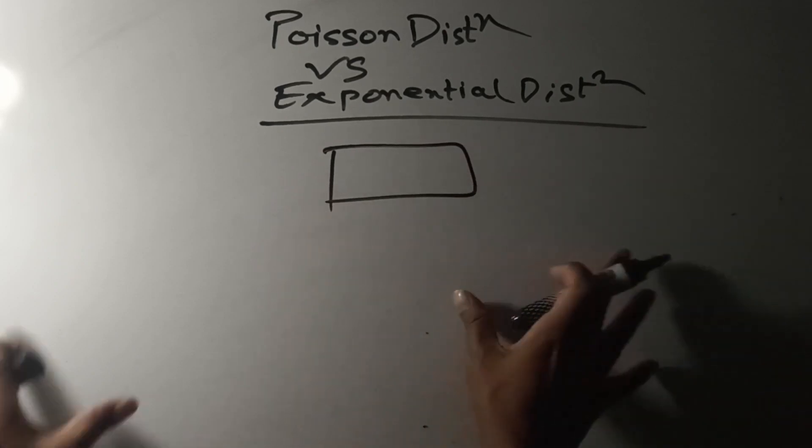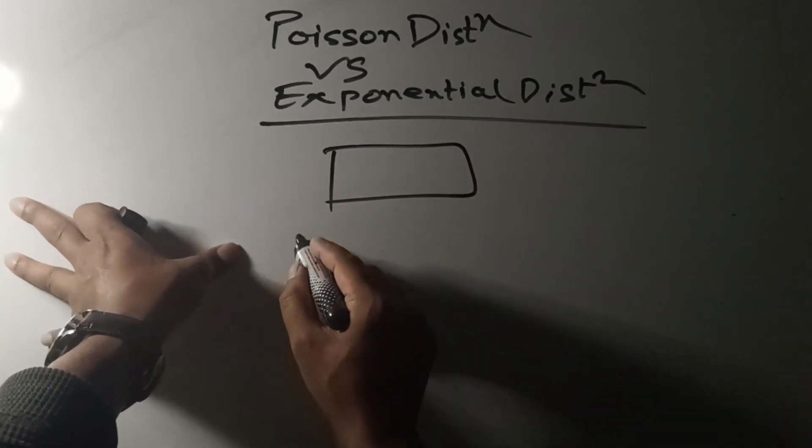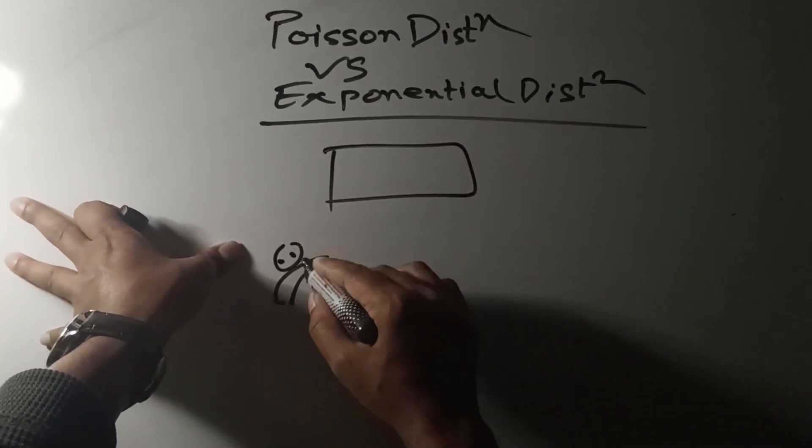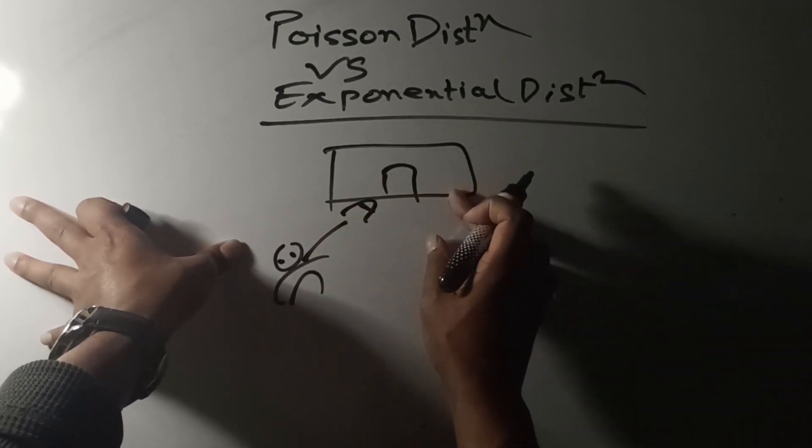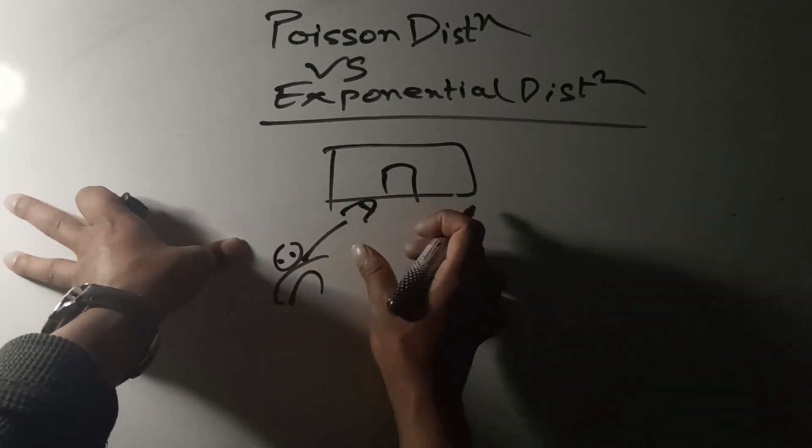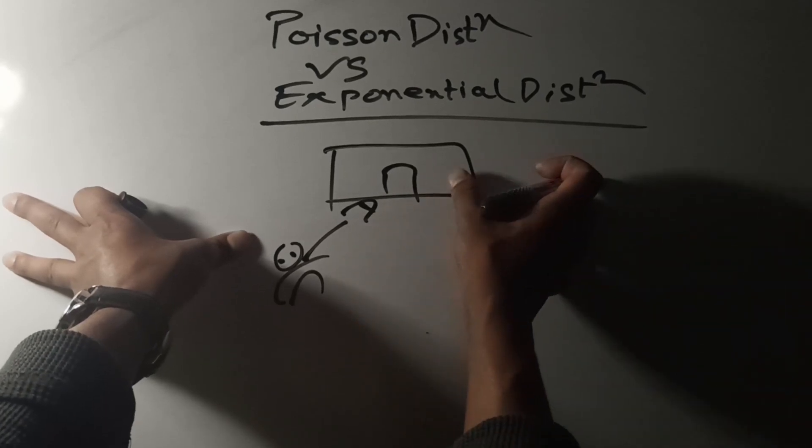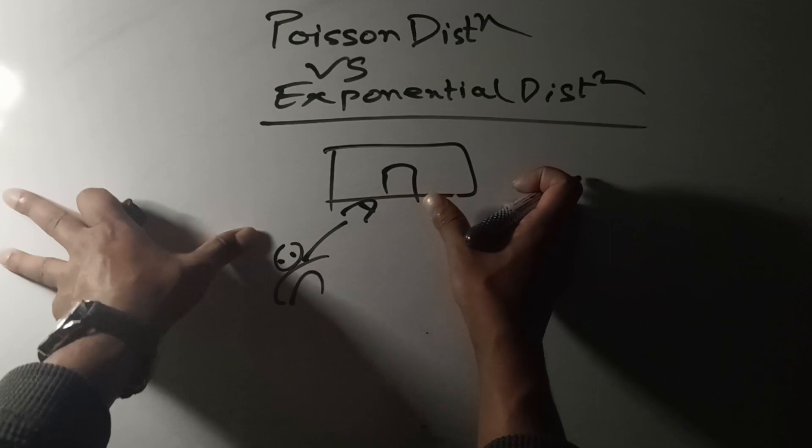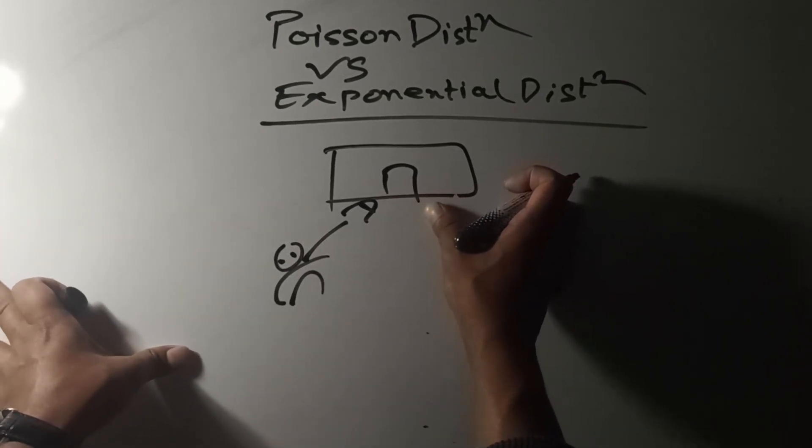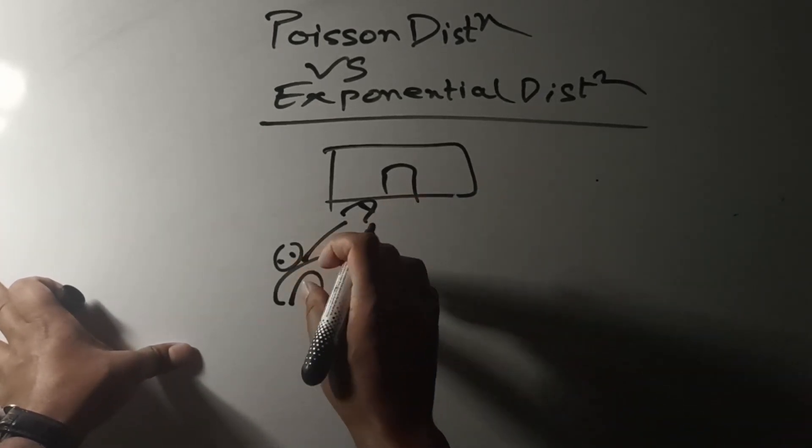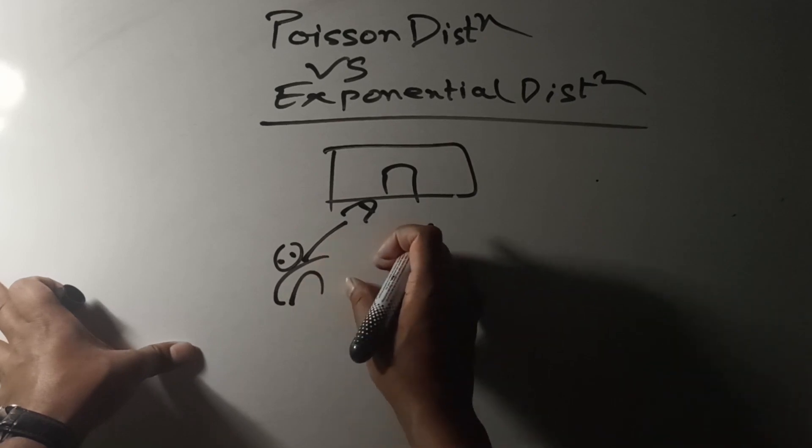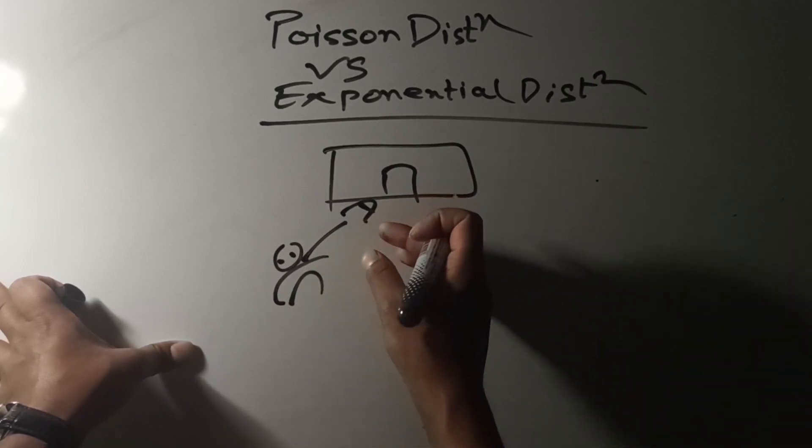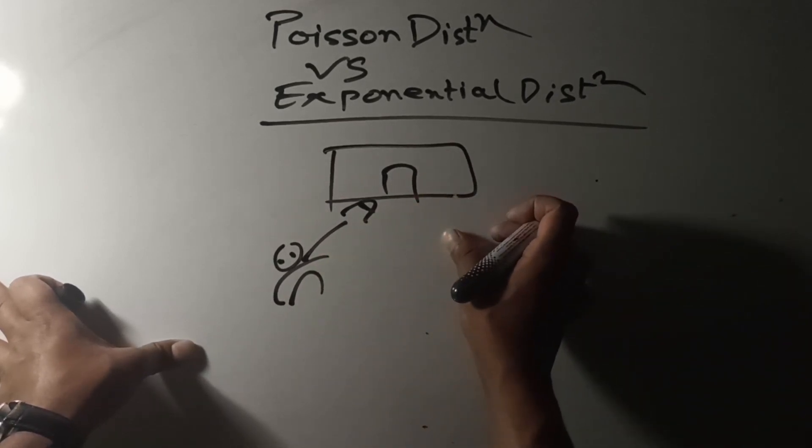Suppose there is a supermarket with customers who enter. The customers for the supermarket are one kind of event, an event of success we can say. This is an event occurring at random points in time because